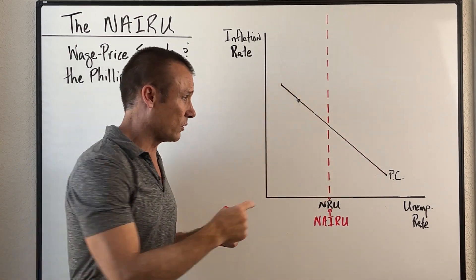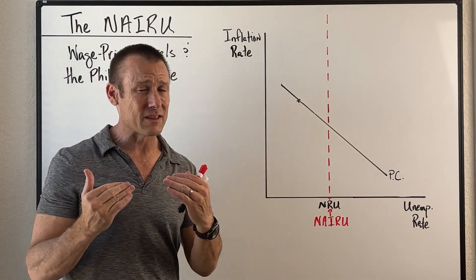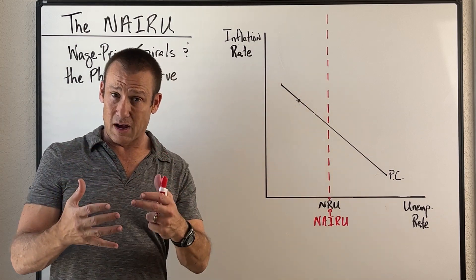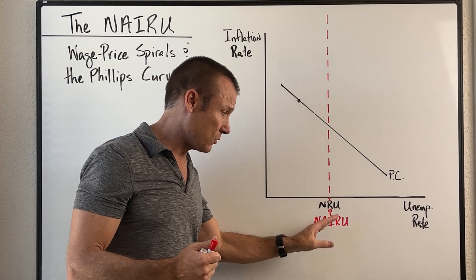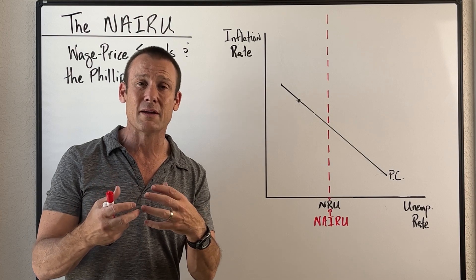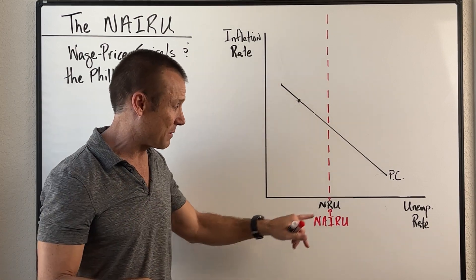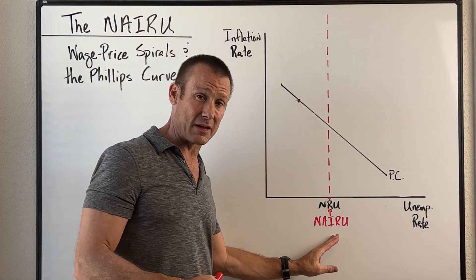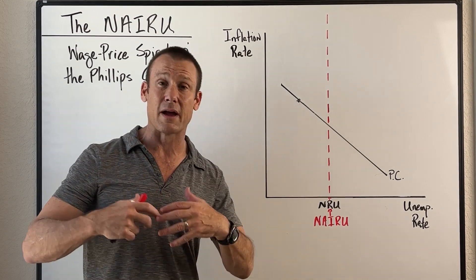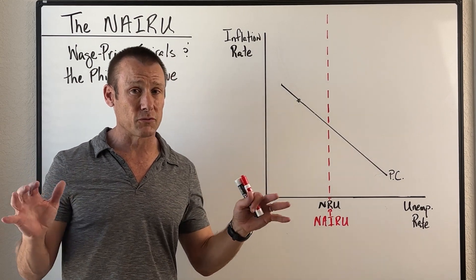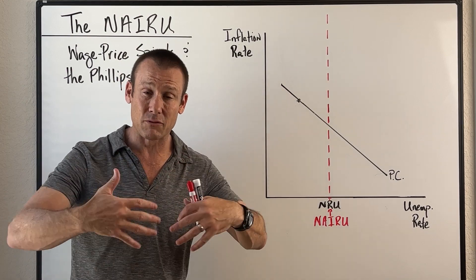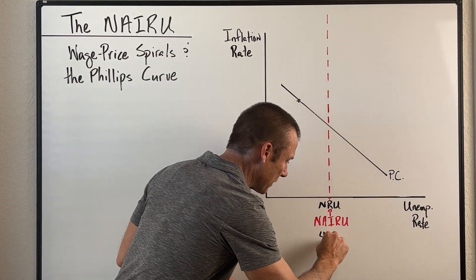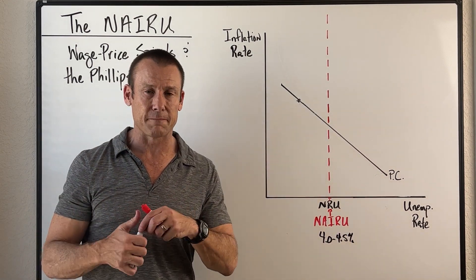As people started to look at the Phillips curve as a policy choice, economists said you can't just accept lower and lower unemployment and just a higher inflation rate — you're going to make the inflation rate accelerate upwards. So the NAIRU and NRU are used interchangeably. They both coincide with what we call full employment. Full employment does not mean 100% of people have found a job — it has some level of unemployment. Currently, the NAIRU is somewhere around 4.0 to 4.5 percent.